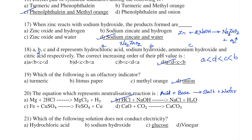Question number 21. Which of the following solutions does not conduct electricity? Option A — Hydrochloric acid, B — Sodium hydroxide, Option D — Vinegar, Option C — Glucose. The correct answer is Option C — Glucose. Options A, B and D are an acid, a base, and an acid respectively. Acids and bases undergo ionization and form ions, and these ions conduct electricity. Glucose cannot dissociate completely, so it will not conduct electricity — hence the answer is glucose.